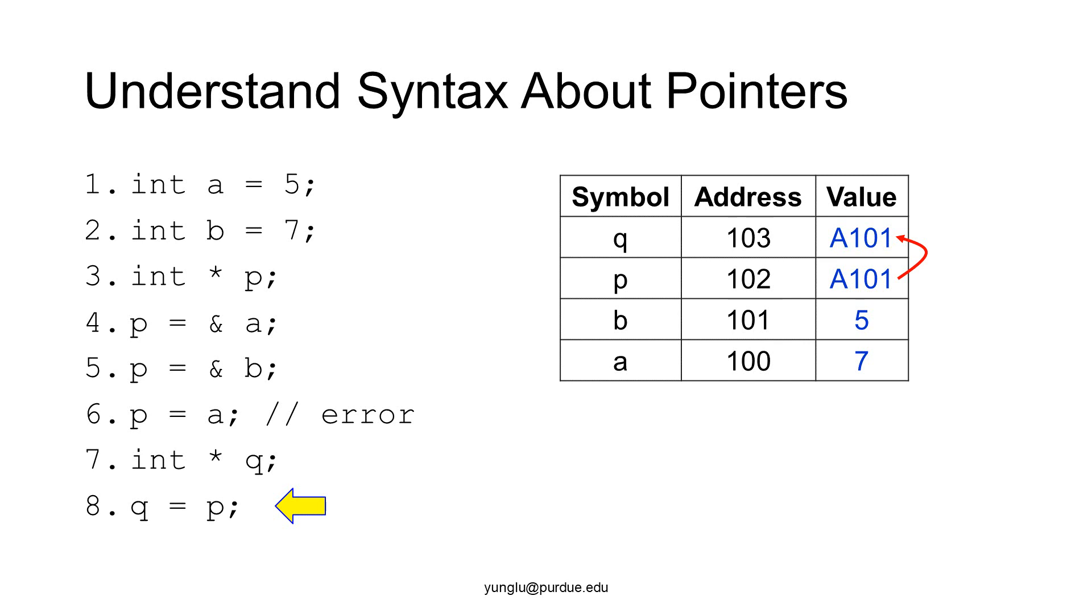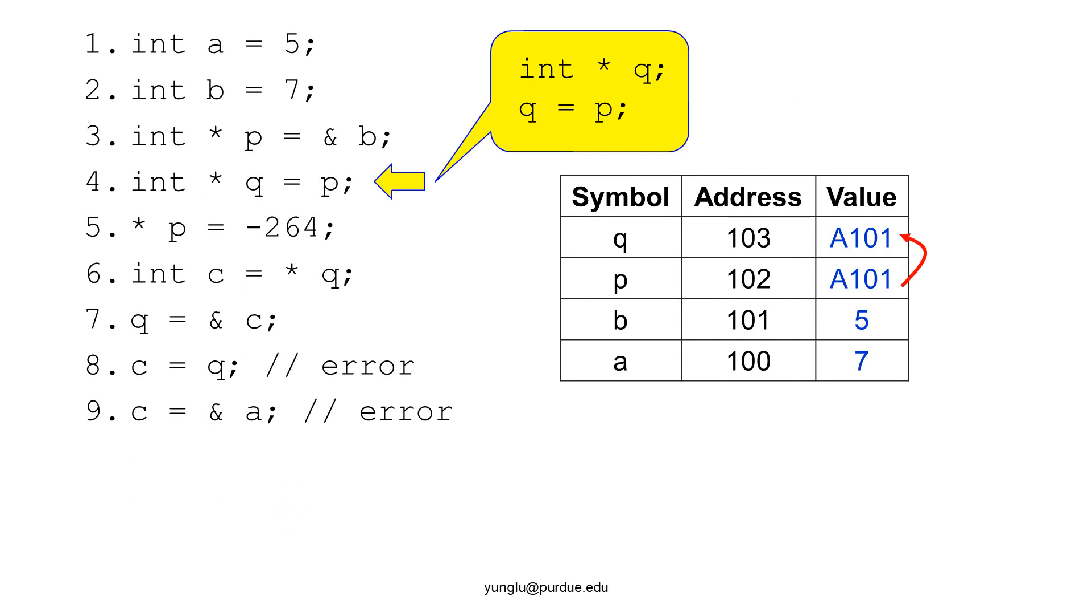Let's see even more examples. We can use the fourth line to do two things, creating an integer pointer and also assigning the value of P to the value of Q. The fourth line can be divided into two statements shown in the callout.